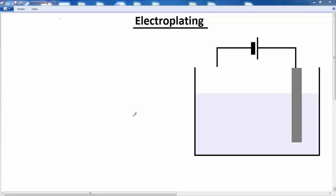In this lesson we're going to look at an application of electrolysis called electroplating. Electroplating is where you want to cover the surface of one metal with another.